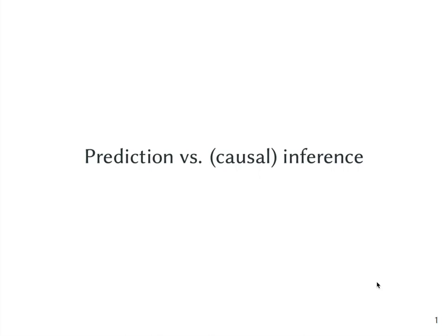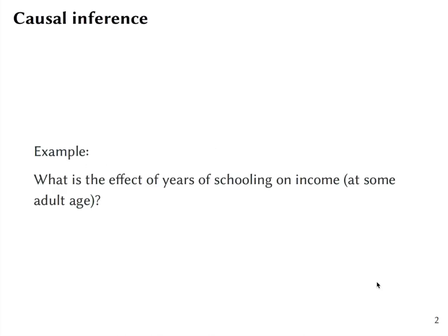When we talk about predictions as opposed to causal inference, we can think about following examples. In econometrics we usually talk about estimation of causal effects where we are, for example, interested in the effect of years of schooling on income at some adult age.